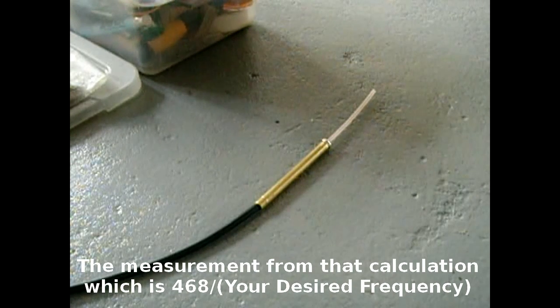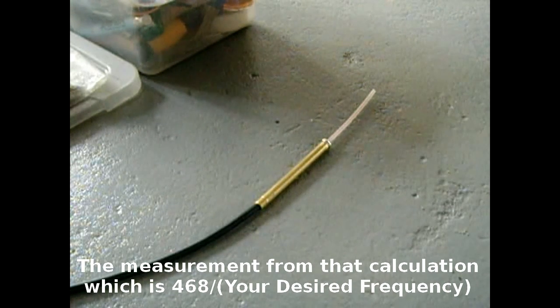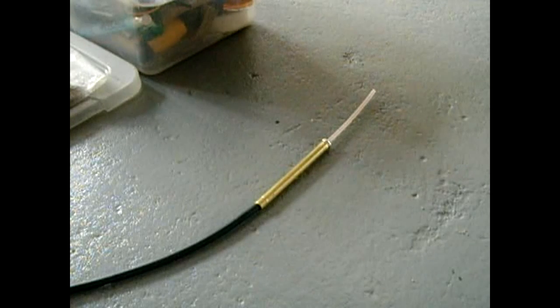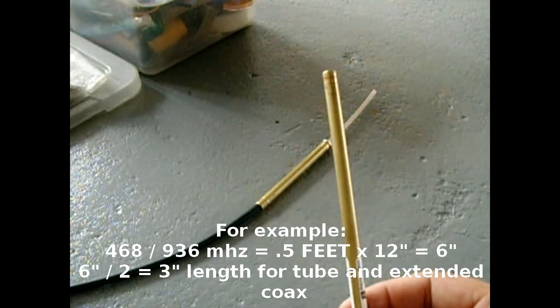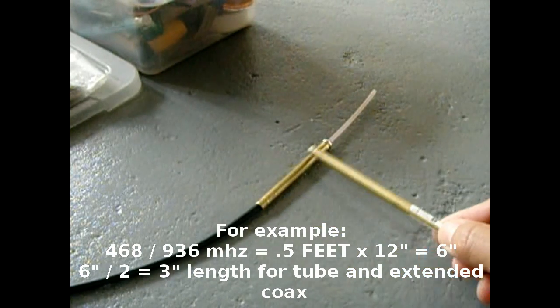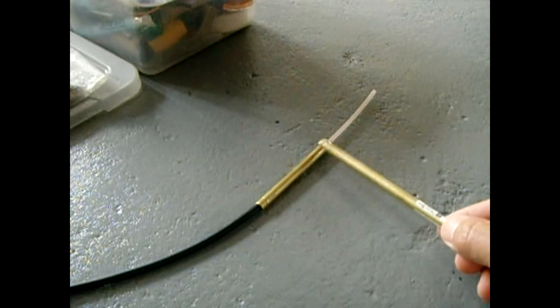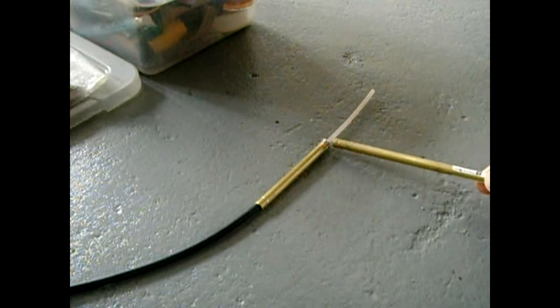Then take your brass tubing and cut it to that measurement, which is half of what you had. So this would be three inches, and then you would leave three inches sticking out.